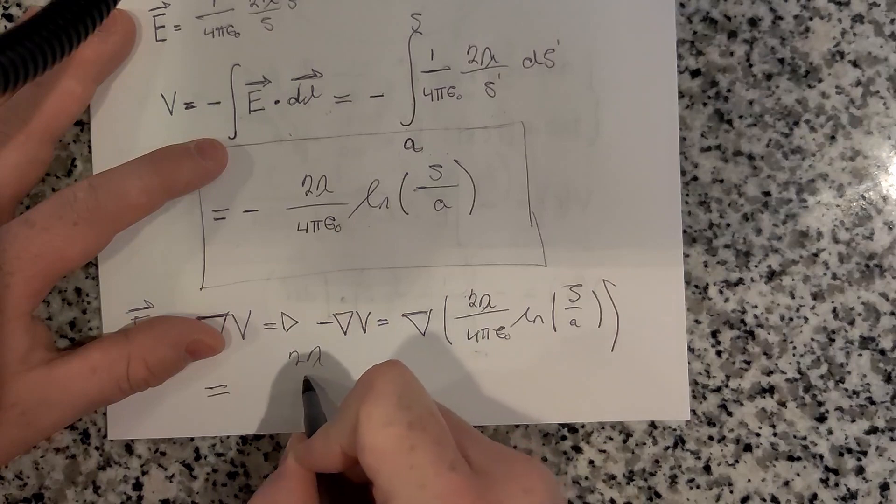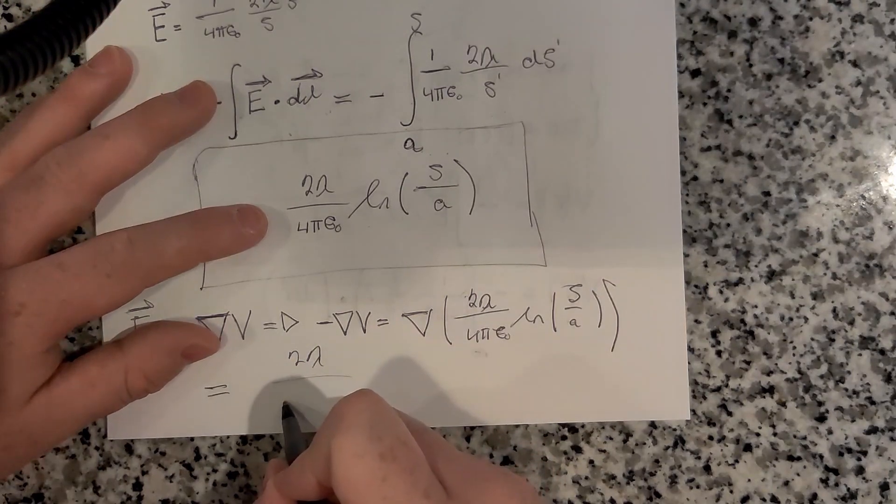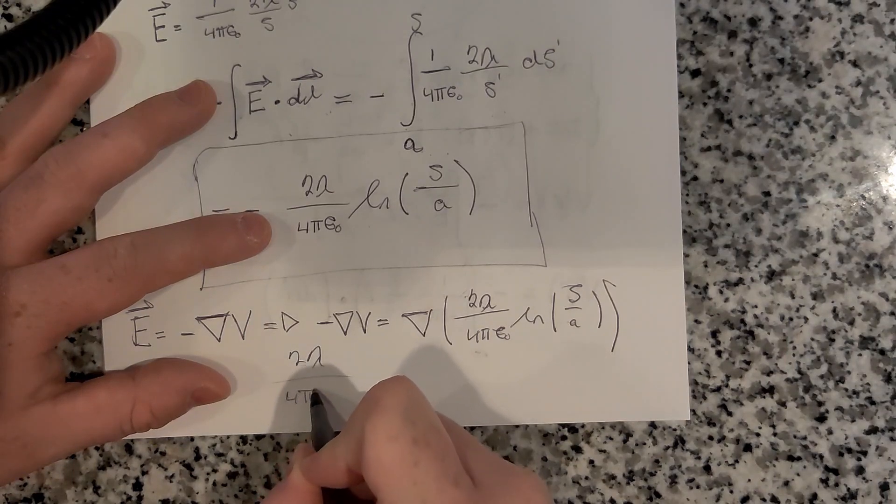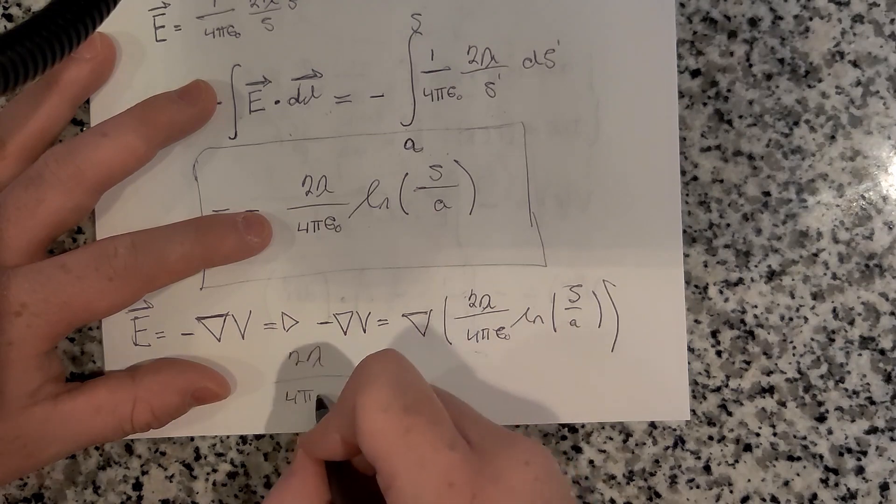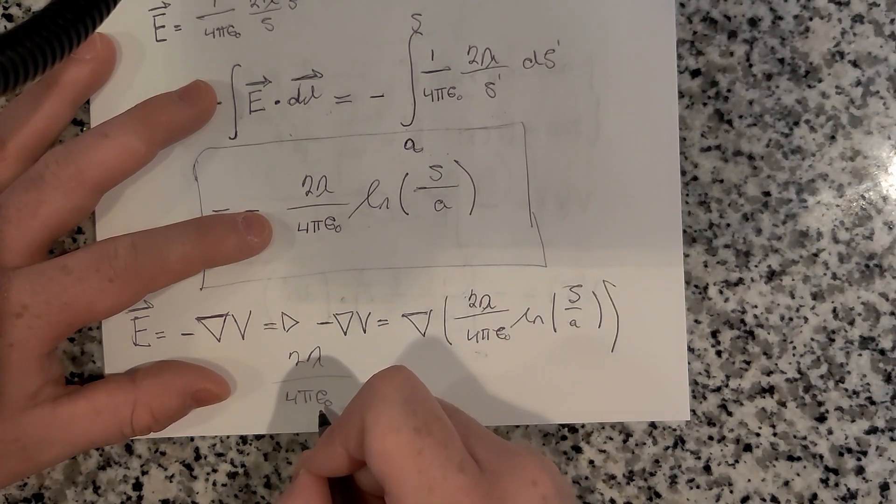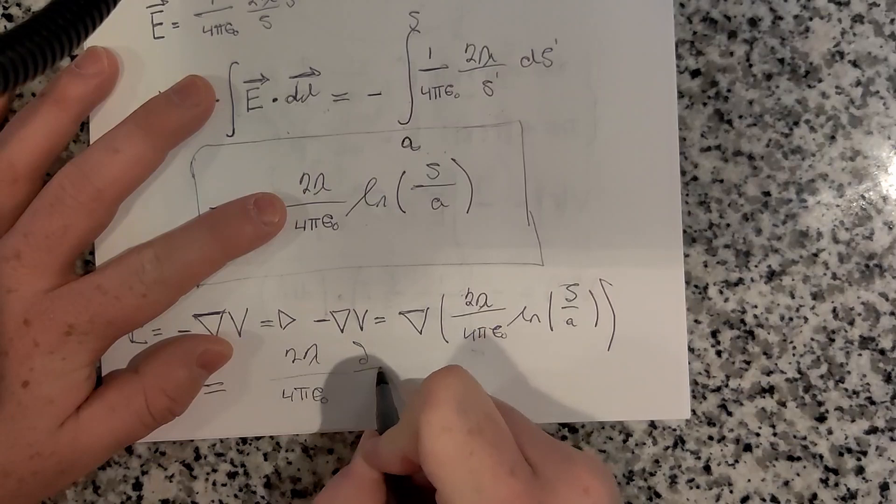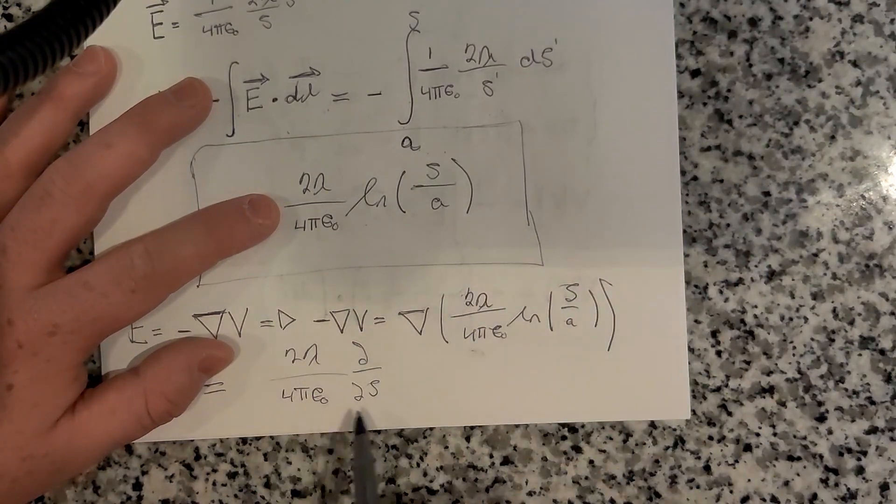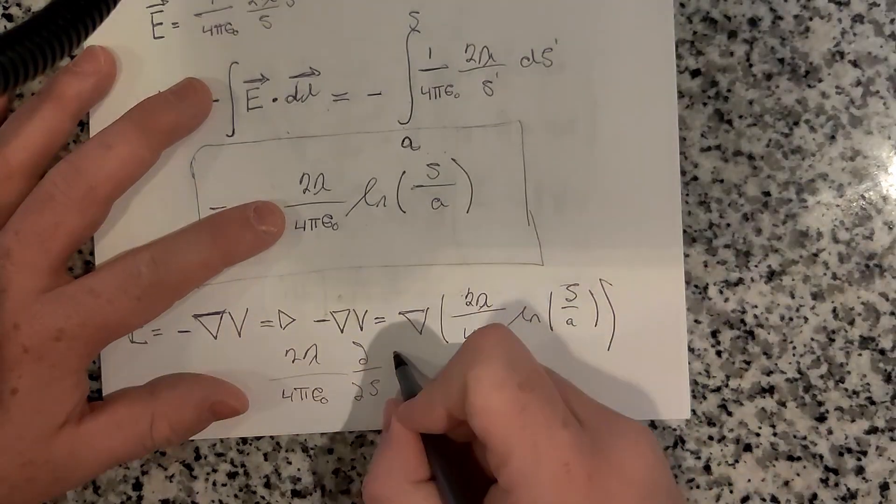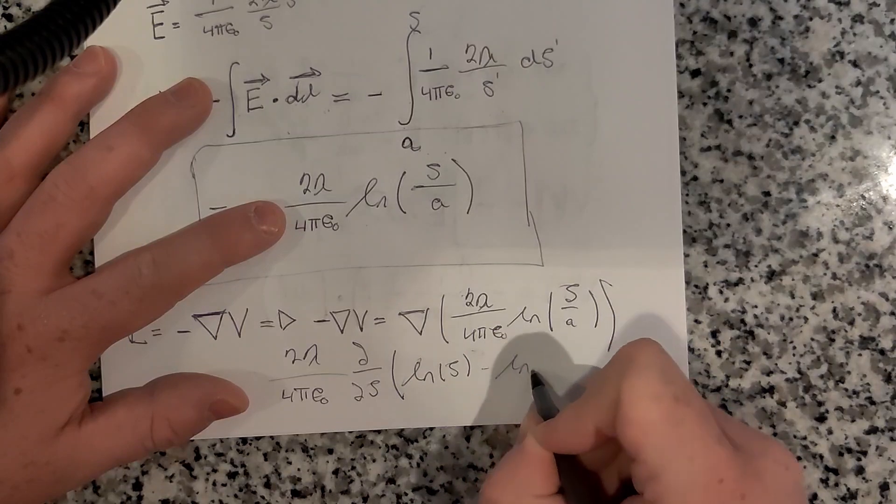Here we get 2λ over 4πε₀. If you write this out, it'll be the derivative of the natural log s. I just pull out the constants from the derivative. We can rewrite this as the natural log of s minus the natural log of a.